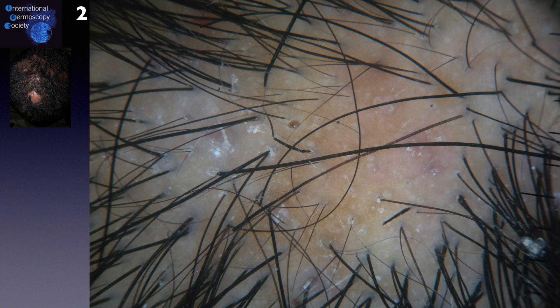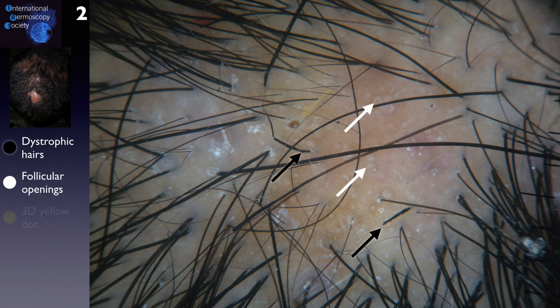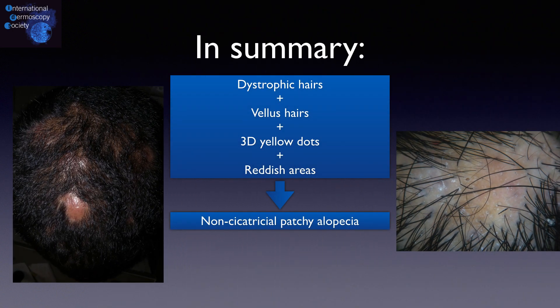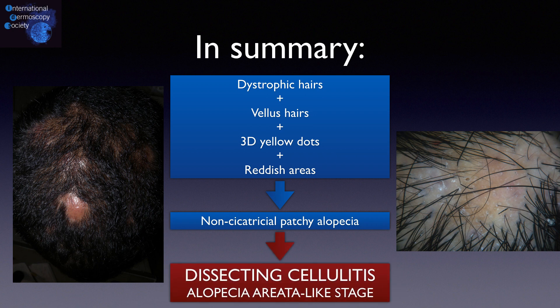Another plaque shows more dystrophic hairs, follicular openings, and a large 3D yellow dot. In summary, the findings of alopecia areata such as dystrophic and vellous hairs, with the presence of 3D yellow dots and reddish areas, could represent dissecting cellulitis in a very early and non-cicatricial stage of the disease.